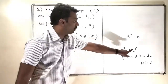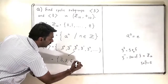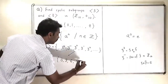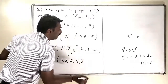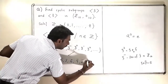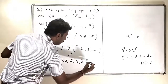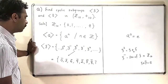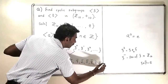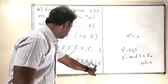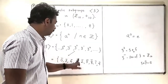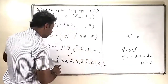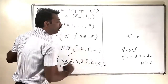3̄ squared means 3̄ plus 3̄, which is 6̄. Then 3̄ cubed is 3̄ plus 3̄ plus 3̄, which is 12̄, becoming 2̄. Then 3̄ raised to 5 is 15̄, which becomes 5̄. 3̄ raised to 6 is 18̄, which becomes 8̄. Then 21̄ becomes 1̄, and 24̄ becomes 4̄. We still have 7 left — 27̄ becomes 7̄. So all 10 elements of Z10 are covered.